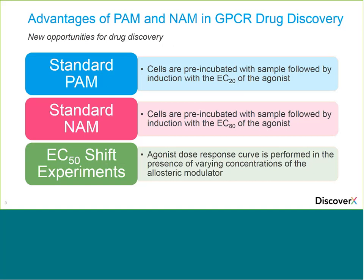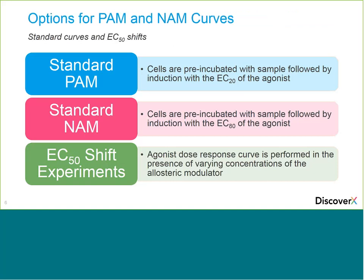When we run our standard PAM and NAM assays, cells are pre-incubated with increasing amounts of your sample. For a PAM assay, this is followed by induction with EC20 of the agonist. For a NAM assay, cells are incubated with increasing amounts of sample followed by induction with EC80 of the agonist. You will then see either an enhancement or an attenuation in the signal. Another option we provide — which clients use frequently and is ideal for PAMs and NAMs — is the EC50 shift experiment.